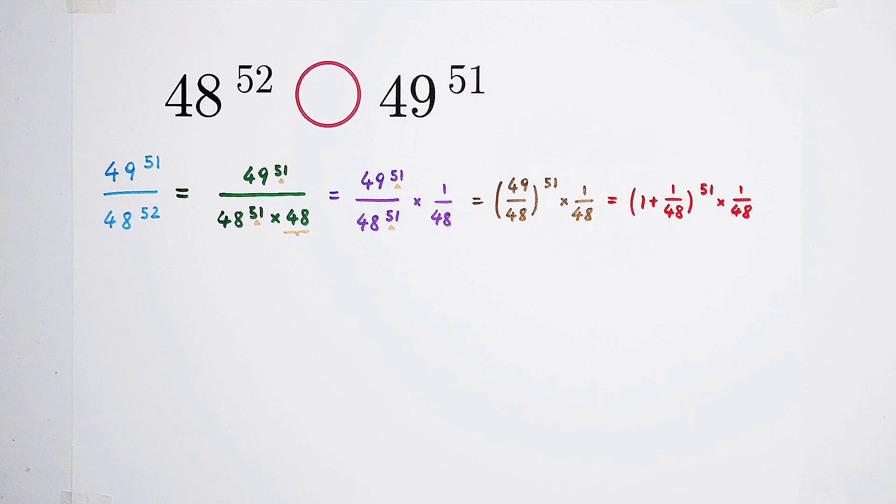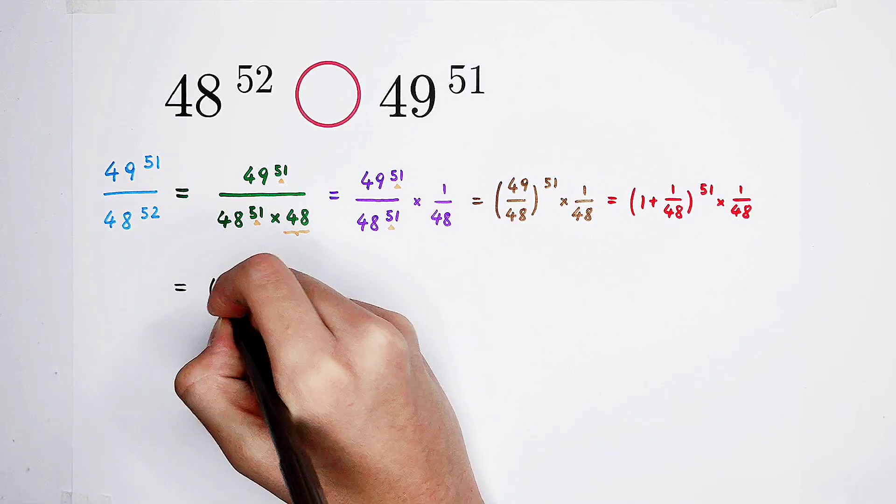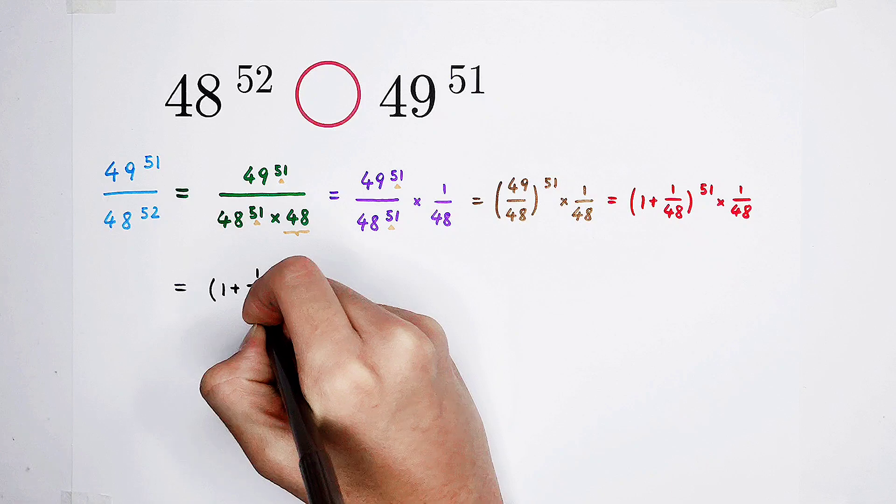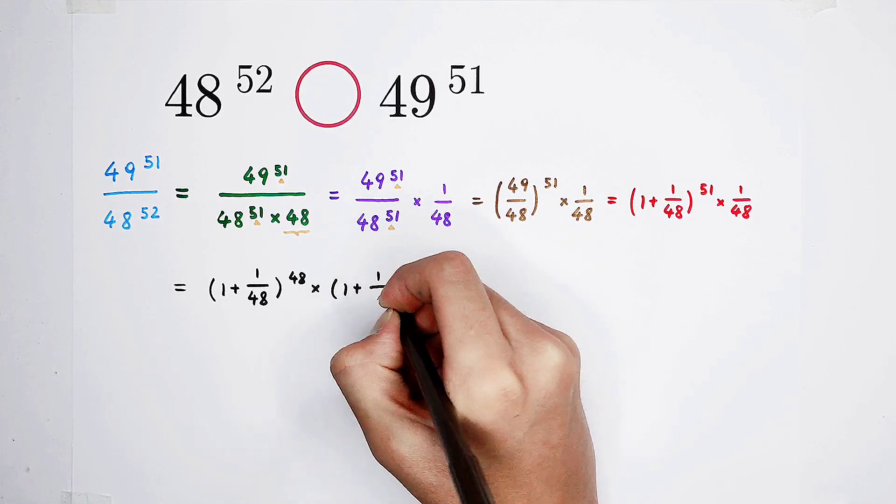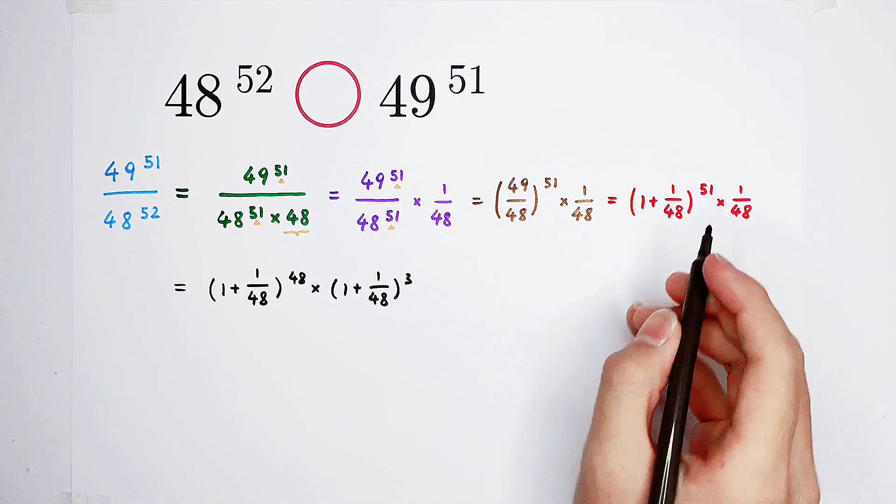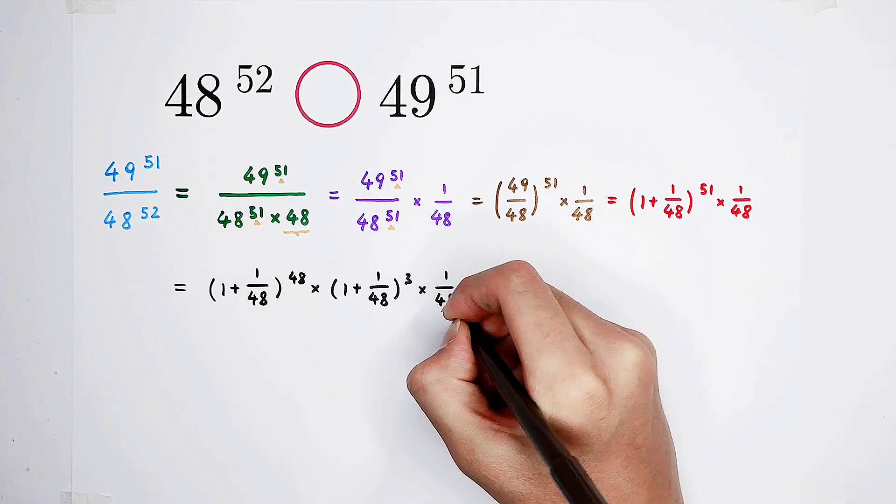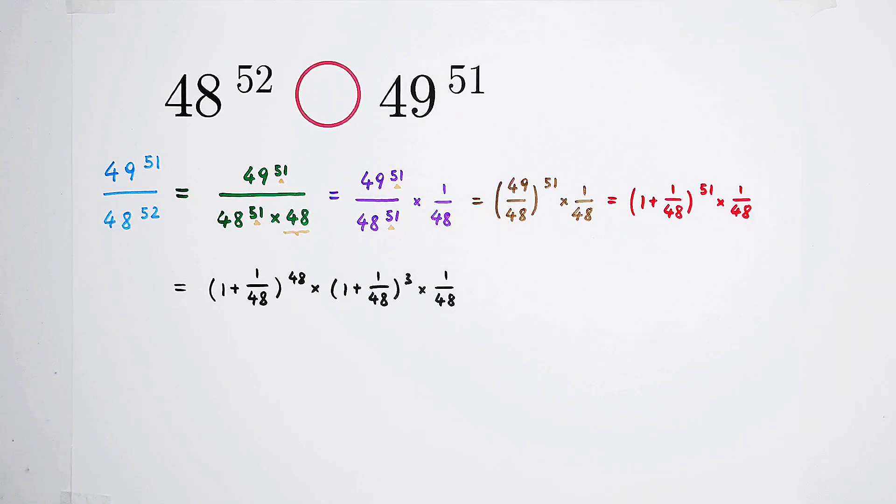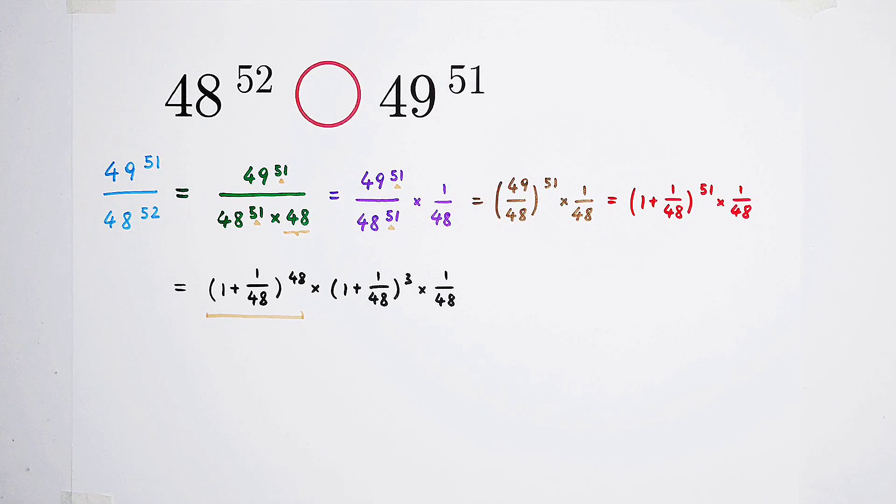What can we do, actually? We can write this 51 as 48 plus 3. Then, it's gonna be... I'm gonna write here. 1 plus 1 over 48, also the power of 48, then times 1 plus 1 over 48 to the power of 3. Because 48 plus 3 is 51. Of course, don't forget. Multiply this one by 1 over 48. Because we have it here. And focus on this guy. 1 plus 1 over 48 to the power of 48.